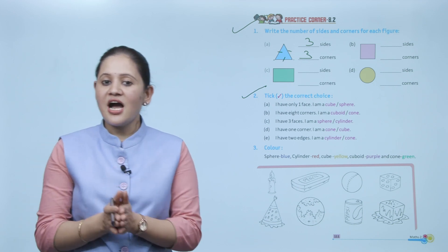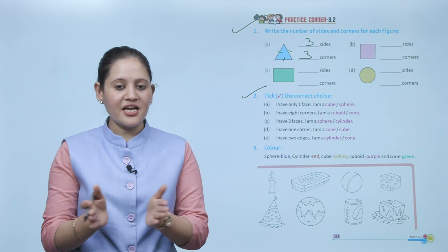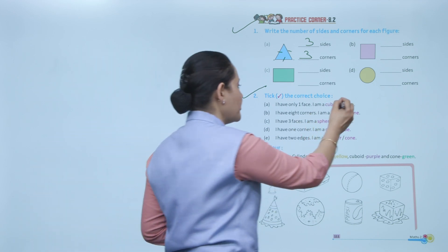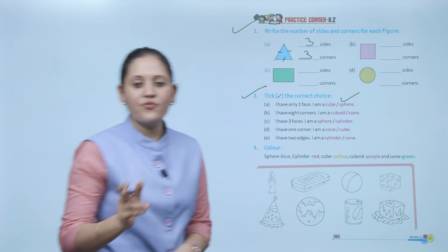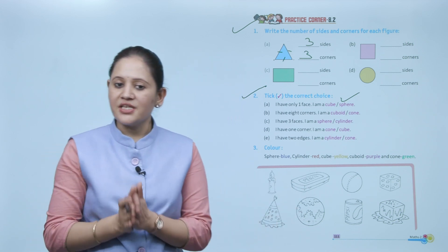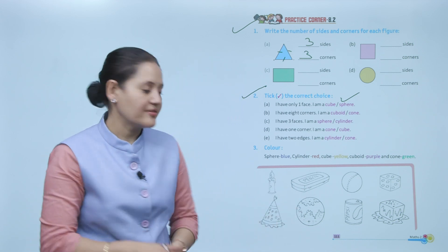Take the correct choice: 'I have only one face.' The answer is sphere, because a sphere has only one curved face.